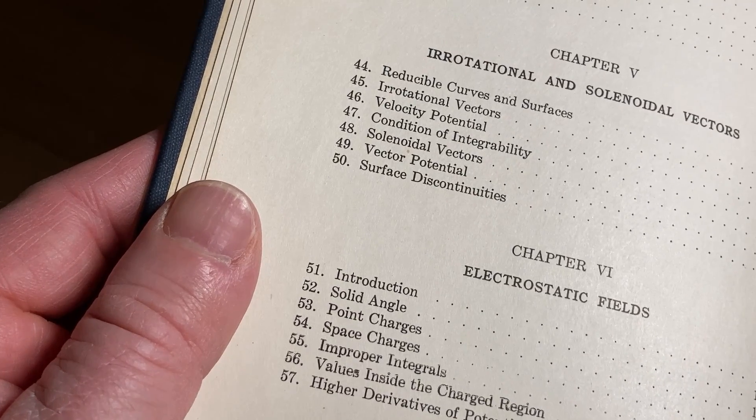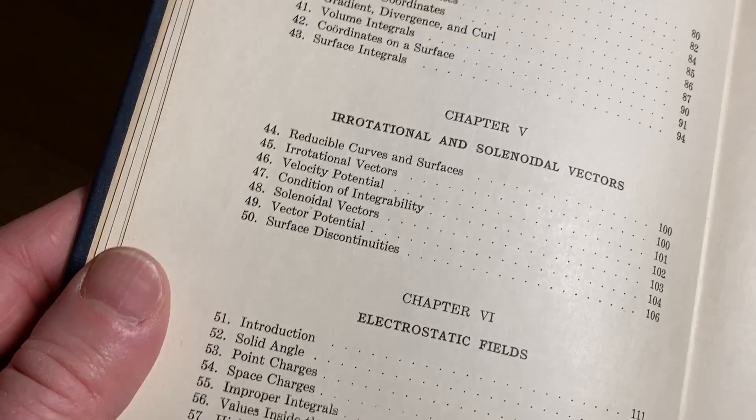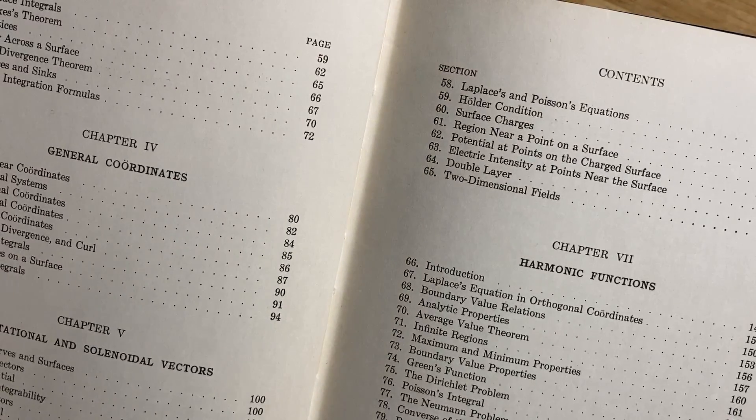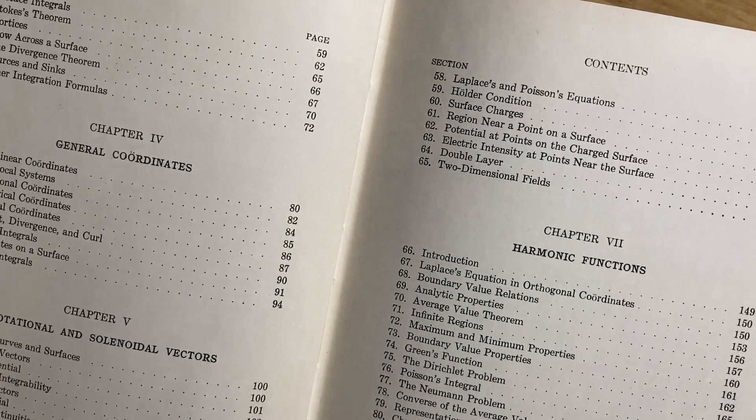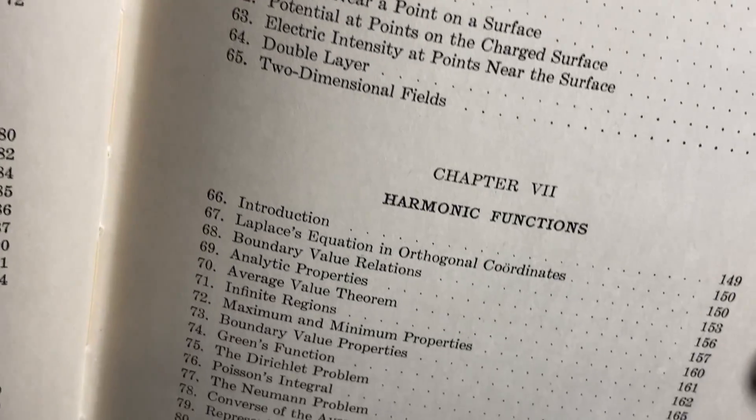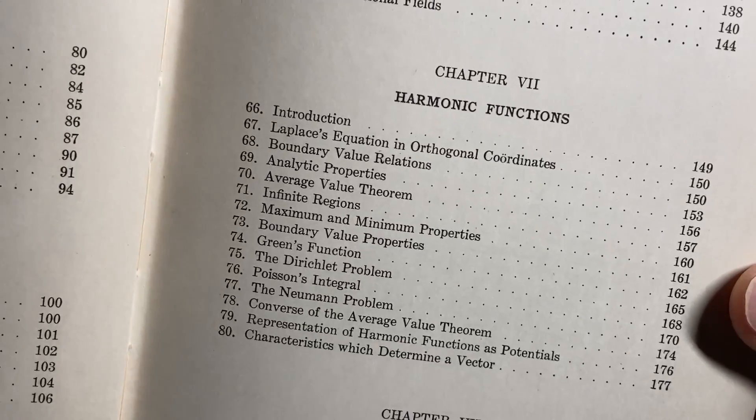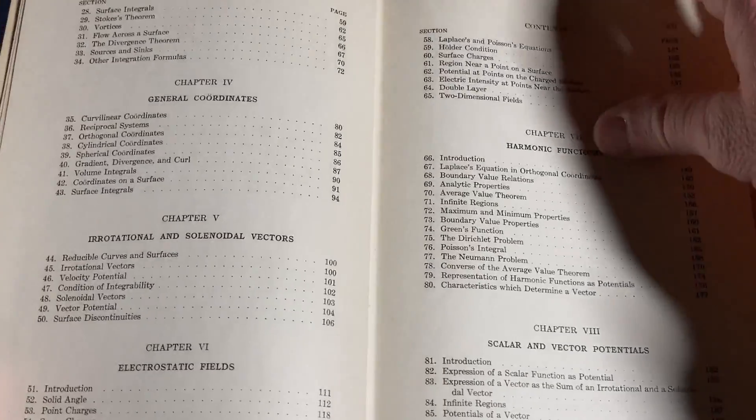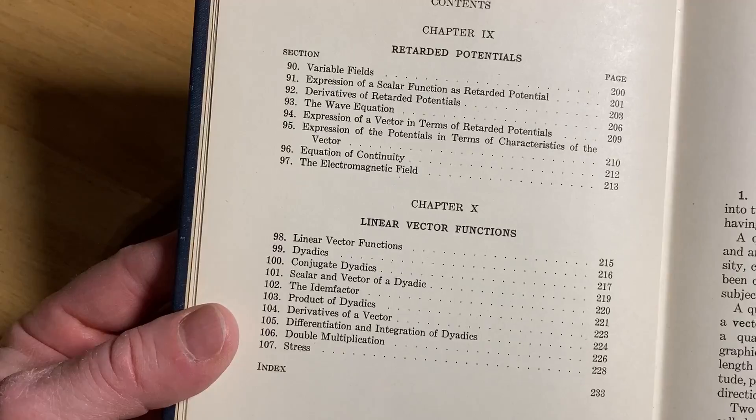Electrostatic fields. Really cool. Some interesting topics, right? Topics you're not going to find in your typical calculus book. Laplace's and Poisson's equations. I believe that's how you say it. Poisson. Poisson means fish in French, I believe. If you speak French, please let me know. But I'm pretty sure that's right. Harmonic functions. I first saw harmonic functions in a course on complex analysis, actually. Scalar and vector potentials. Retarded potentials. And then linear vector functions.